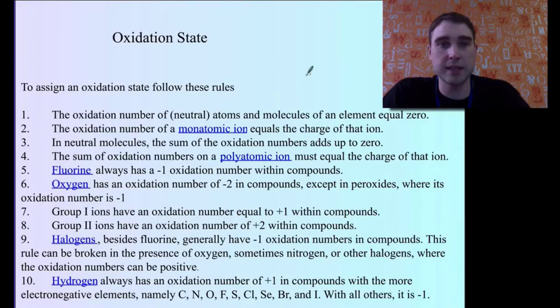If we were looking at polyatomic ions, it has to equal the charge on that ion. So the oxidation number has to equal the charge on that ion. So if we had sulfate, SO4 2 minus, the oxidation number there would be equal to minus 2.